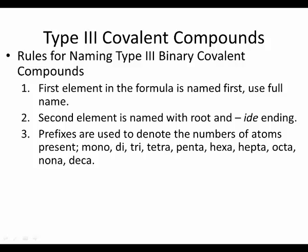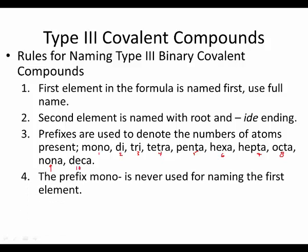We use prefixes to note how many atoms are in the compound, so we should memorize them: one through ten. The prefix 'mono' is never used for naming the first element. If the symbol is there, it's evident there's one of them, so they don't use mono for that. But if there are two of the first element, we'd use 'di.' All other prefixes are used — just not mono for the first element only.